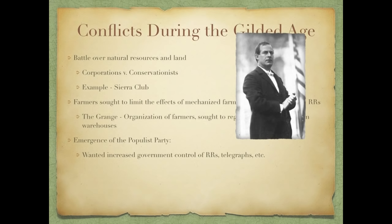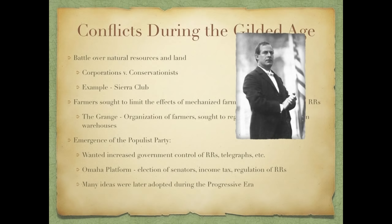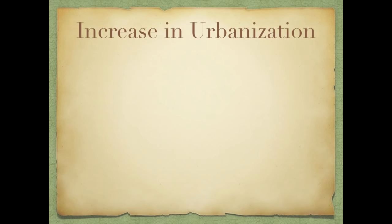So we have the emergence of the Populist Party, which wanted to increase government control of railroads, telegraphs, etc. The main figure was William Jennings Bryan, who ran for election in 1896. The Omaha Platform called for the election of senators, an income tax, regulation of railroads, and the introduction of silver in addition to the gold standard. Many of these ideas were later adopted during the Progressive Era, including the income tax, direct election of senators, and the secret ballot — or the Australian ballot.